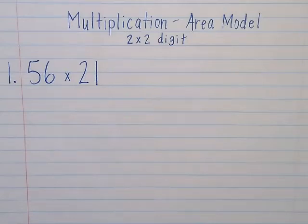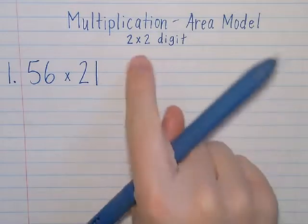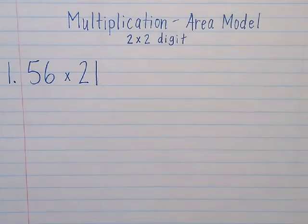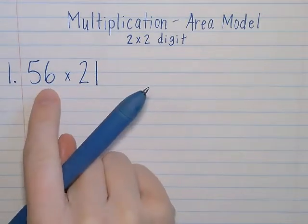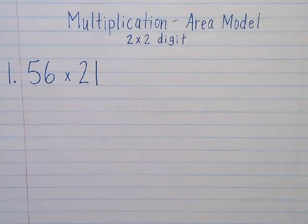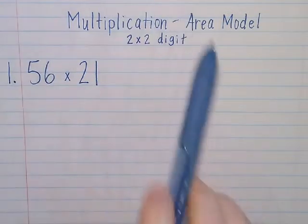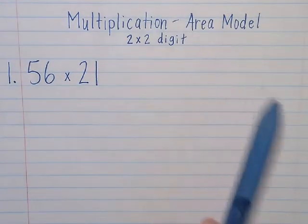Hi, I wanted to show multiplication using an area model, focusing on 2 by 2 digit multiplication. If you watched the other video, I showed 56 times 21 using the standard algorithm, and so this video is going to show how I can set that up using the area model.